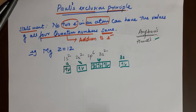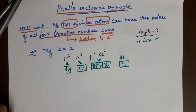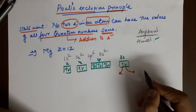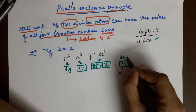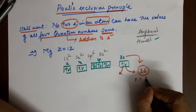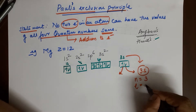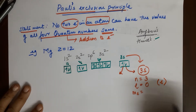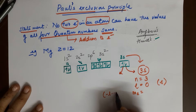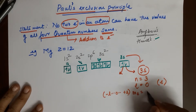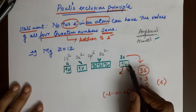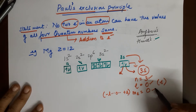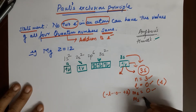I'll take two examples to make the concept clear. The first example is the two electrons in 3s. Since both electrons are in 3s, the n value is 3 (principal quantum number), the l value is 0 because we're talking about the s subshell, and the ml value is also 0 since ml ranges from −l to +l, and when l = 0, ml = 0. So both electrons share the same n, l, and ml values.